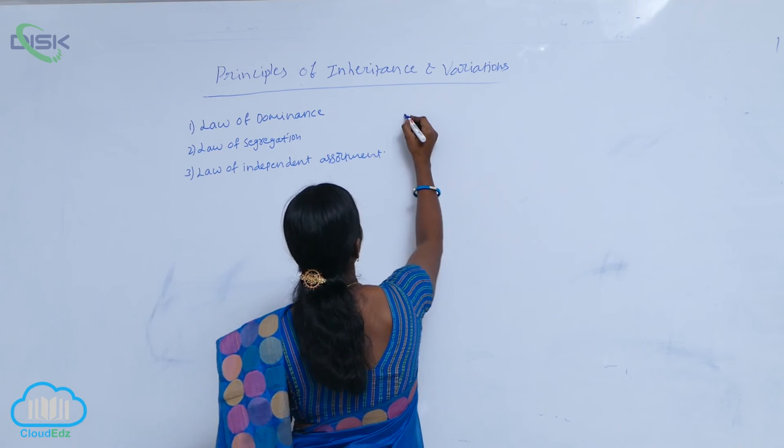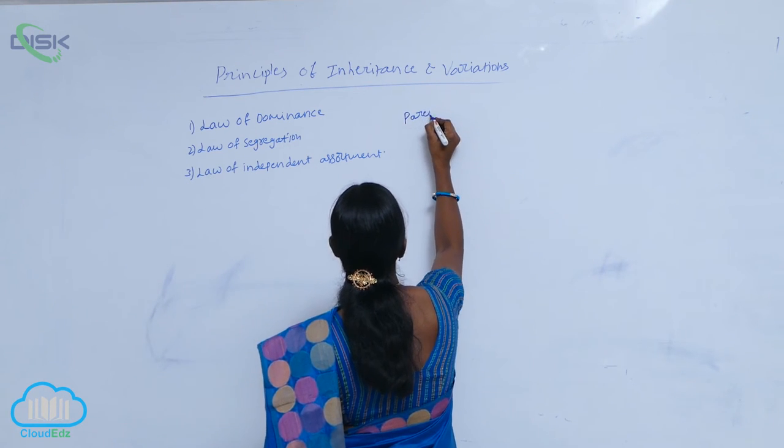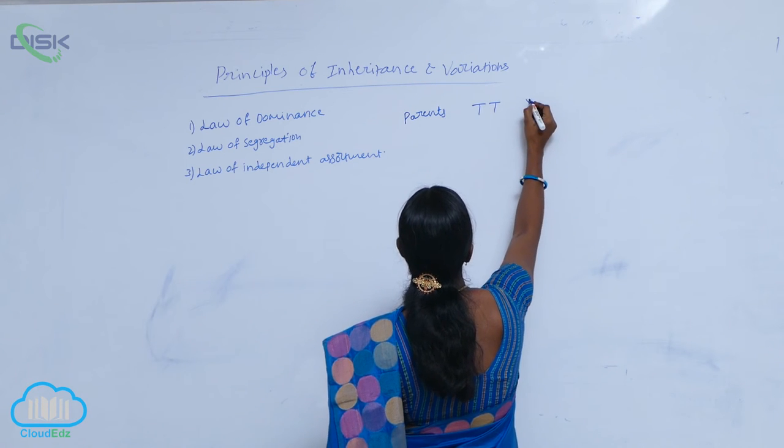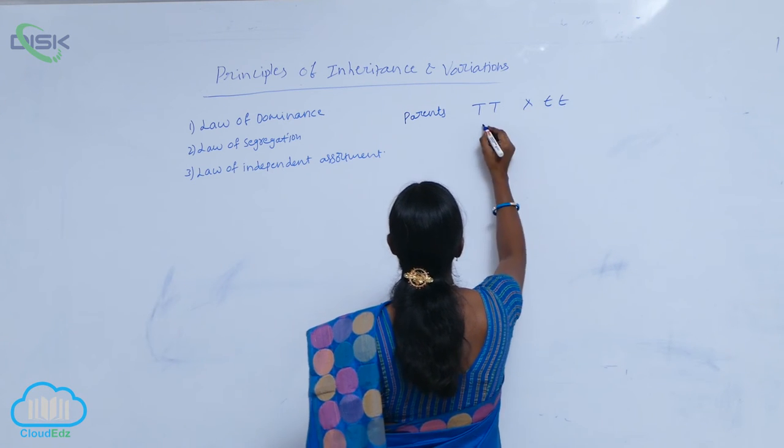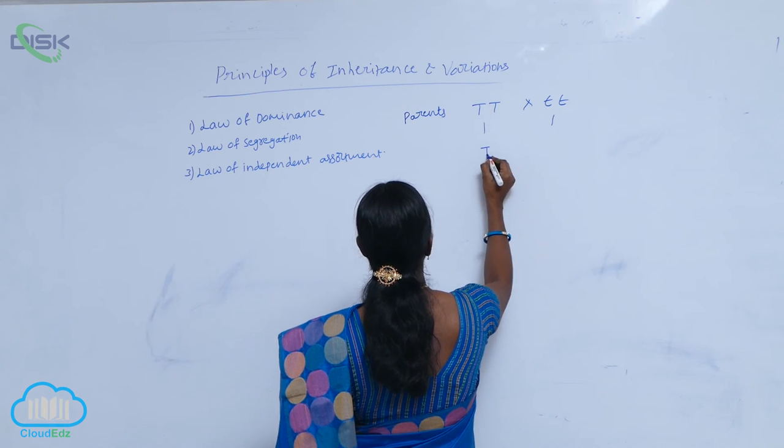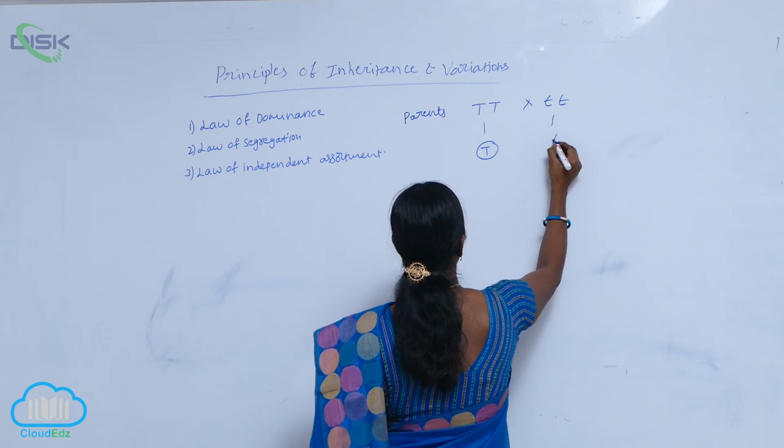For example, you see here, the parents are taken as capital T, capital T and small t, small t. So, the gametes are produced from the tall plant, capital T, small plant, small t.